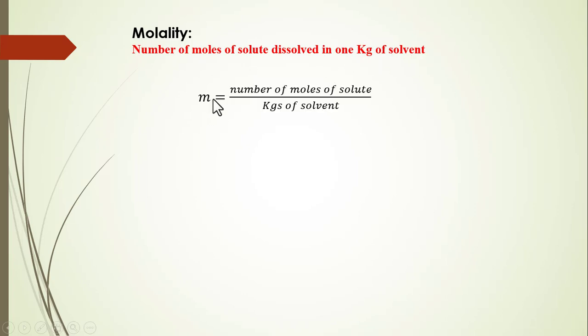This can be written like this: molality is represented with small m and it is equal to number of moles of solute divided by kilograms of solvent. Now, the number of moles of solute can be written as: moles equals weight of substance divided by molecular weight of substance. Let's put in the number of moles into this first equation.